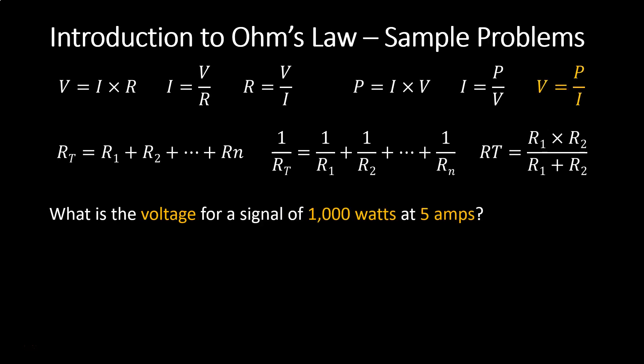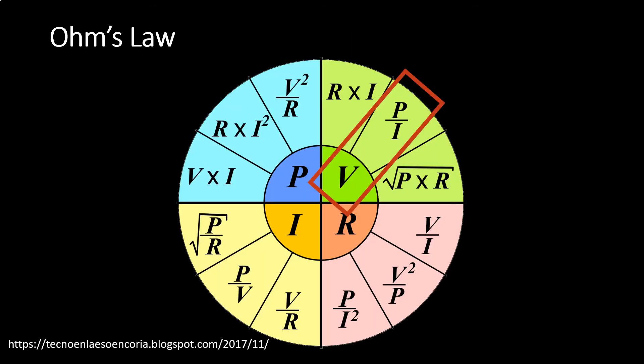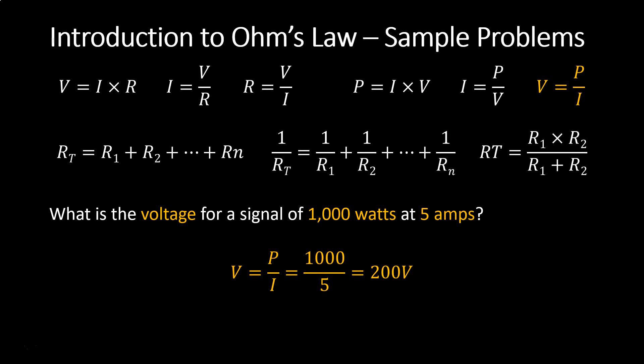For the next problem, what is the voltage for a signal of 1,000 watts at 5 amps? We know P equals 1,000 watts and current I equals 5 amps, and we solve for voltage. If you have that circle in front of you — solving for V, knowing P and I — you can find the equation easily. V equals P over I, or 1,000 divided by 5, equals 200 volts.